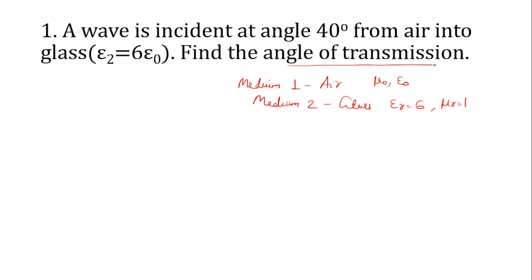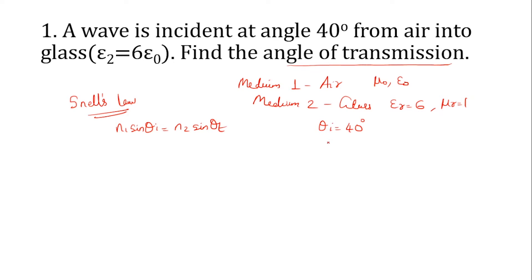What is the equation for angle of transmission? We use Snell's law, which states that n₁ sin θᵢ = n₂ sin θₜ. θᵢ is given in the question — it is 40 degrees. The equation for refractive index n is: n = c√(με). A simpler method is to take the ratio n₁/n₂ = sin θₜ / sin θᵢ.